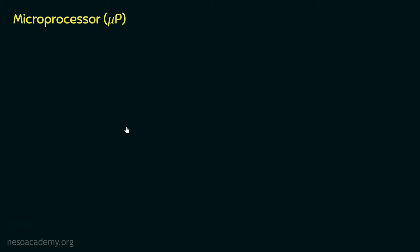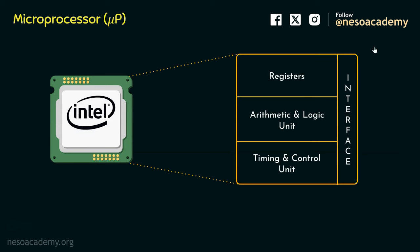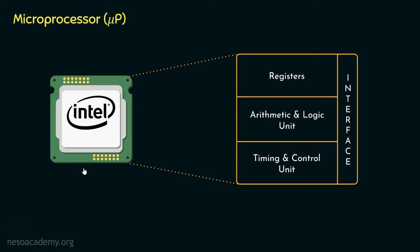In the previous session when we learnt about the microprocessors, we also learnt that these are called mu p. There we had the detailed view and we also talked about the simplified view. From the simplified view, we learnt that all these sections cumulatively form this chip.